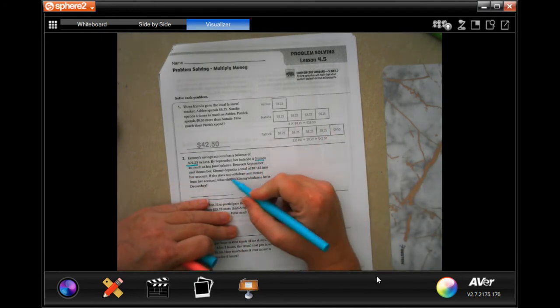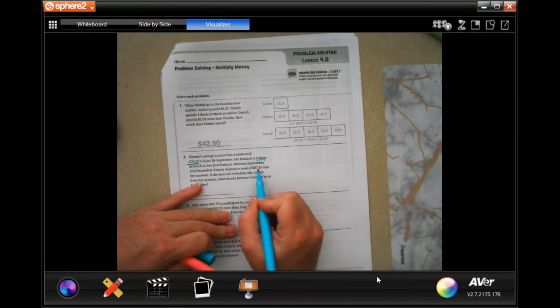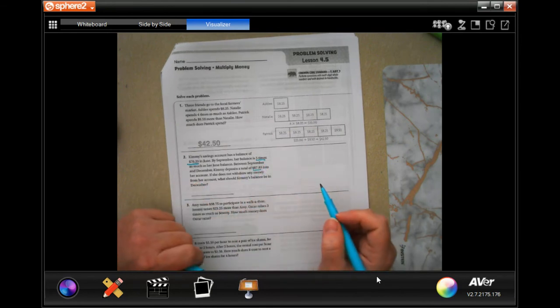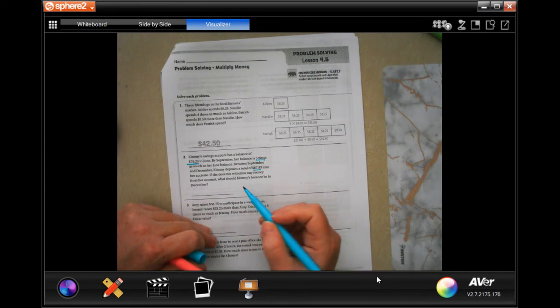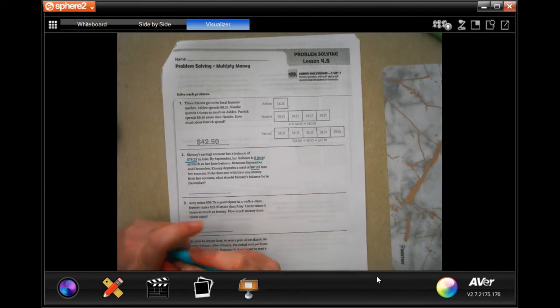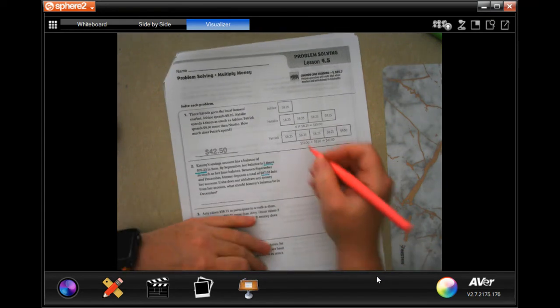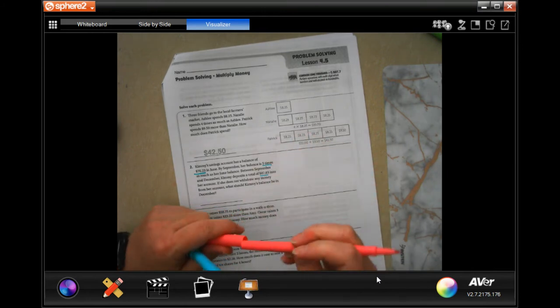Between September and December she deposits a total of $87.83. If she doesn't take out any money, how much will her balance be in December? Okay, so we're going to start by multiplying what she started with times five because that's what it is by September.